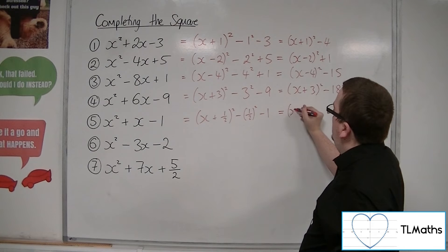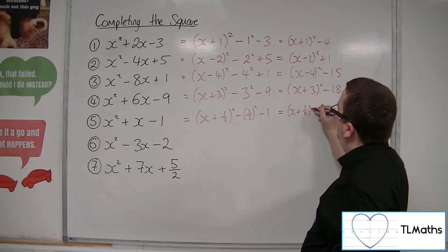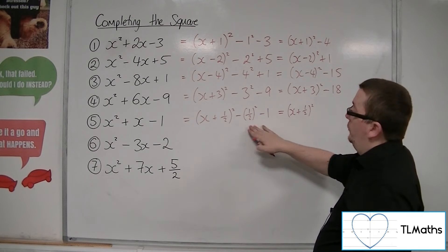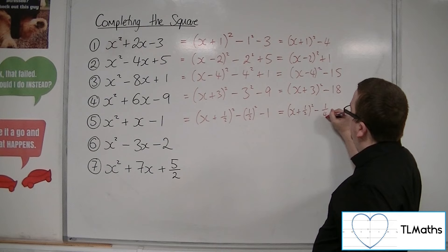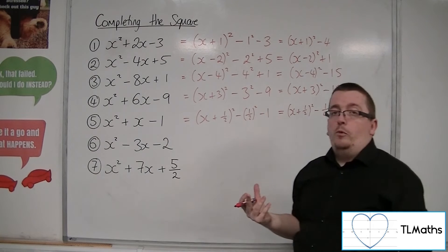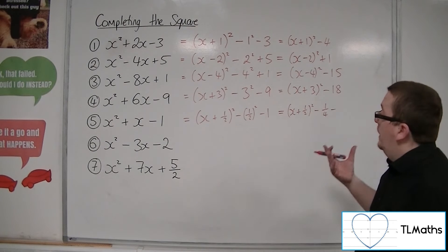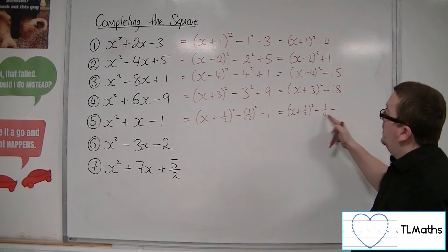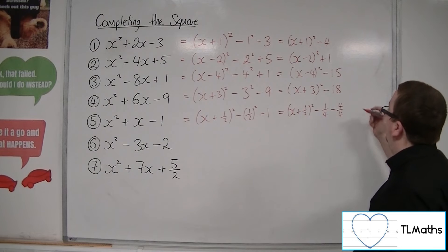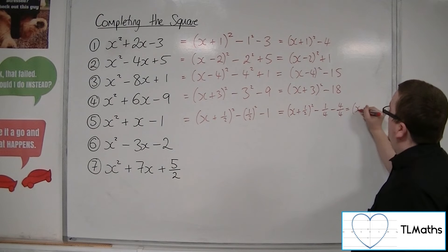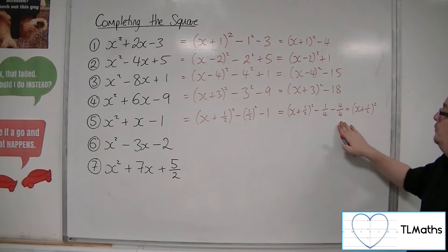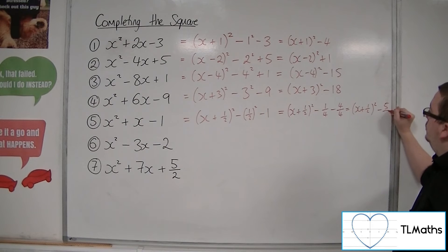So we're going to have x plus a half, squared. A half squared is a quarter, so we've got minus a quarter, minus 1. It makes sense to write 1 with the same denominator so we can combine those two fractions — 1 is 4 over 4. So we've got x plus a half squared, minus a quarter, take away 4 quarters, so minus 5 quarters.